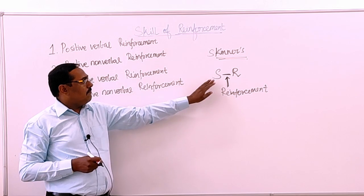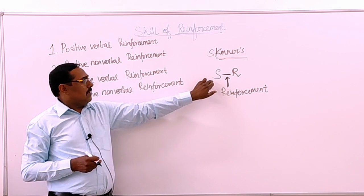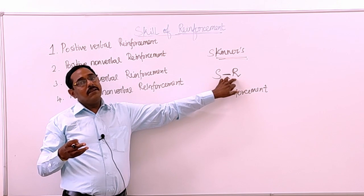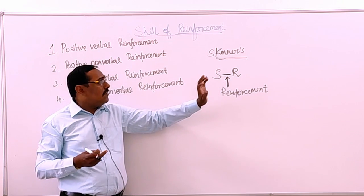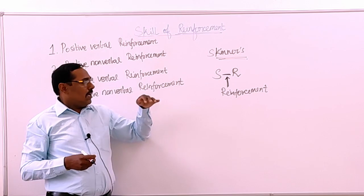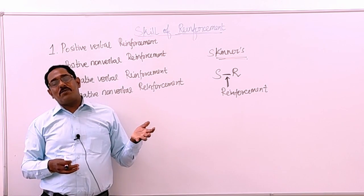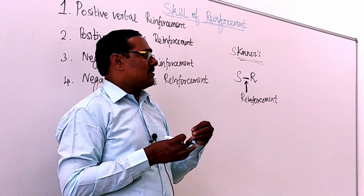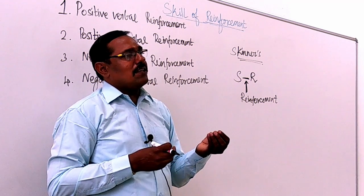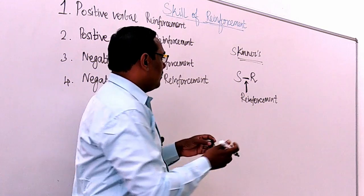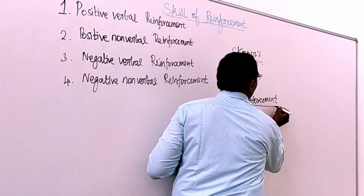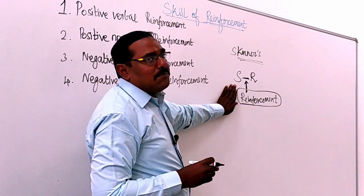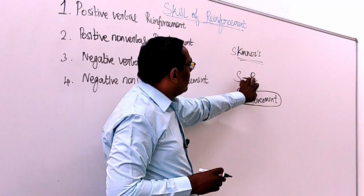Likewise, if there is a student and I ask a question, and the student answers correctly, then I will say 'very good,' 'correct,' 'wonderful' — like that. These words provide reinforcement. If you are not saying good words to the students, they may not answer further. If some students are answering correctly, we have to motivate them. This motivation forms what we call reinforcement, which cements the stimulus and responses.